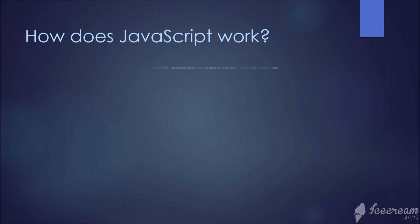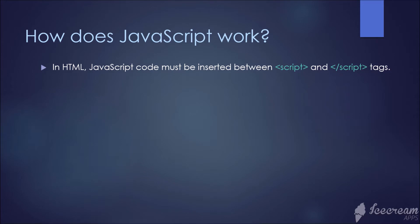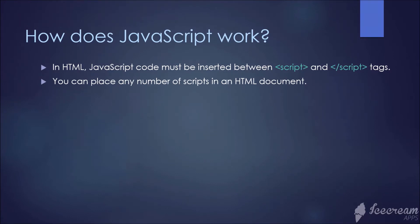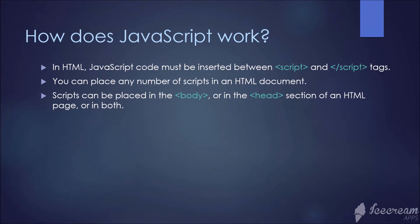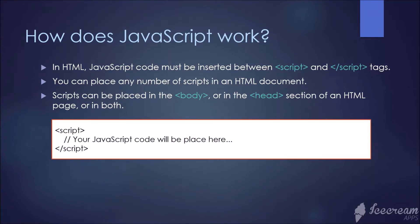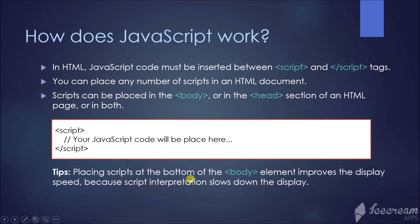How does JavaScript work? In HTML, JavaScript code must be inserted between script tags. You can place any number of scripts in an HTML document. Scripts can be placed in the body or in the head section of an HTML page, or in both. Here is a sample code showing the script tag and where we place our JavaScript code. A tip: placing scripts at the bottom of the body element improves display speed because script interpretation slows down the display.